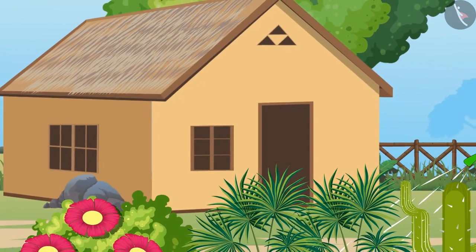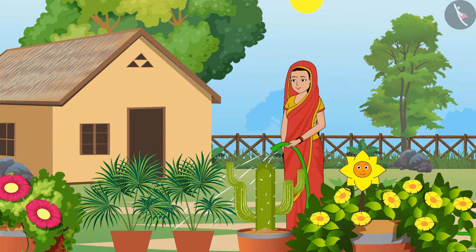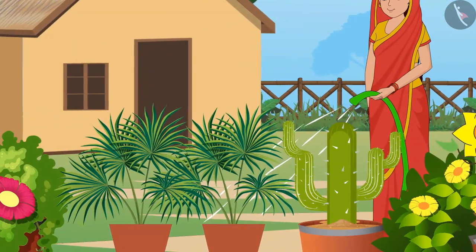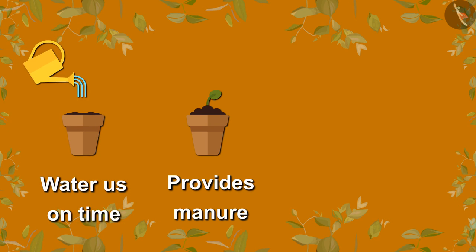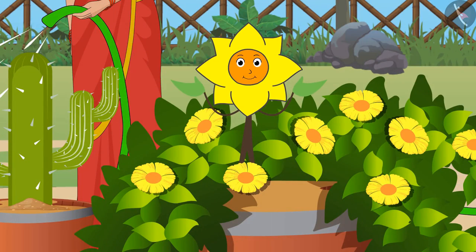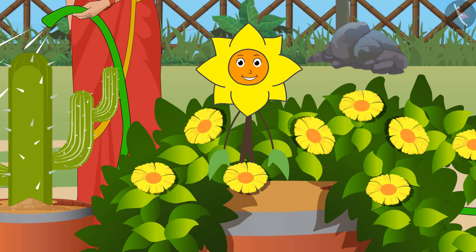Geeta and Ramesh stay with their parents in this house. Their mother is really fond of plants — look, their garden is so beautiful and green! She really takes good care of us: she waters us on time, provides manure, and keeps us in adequate sunlight. Come, let us go inside their house and find out what mischief Geeta and Ramesh are up to today.